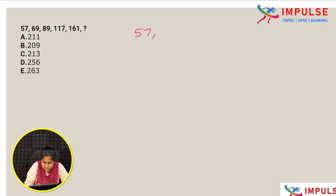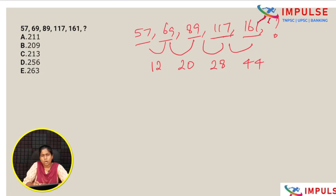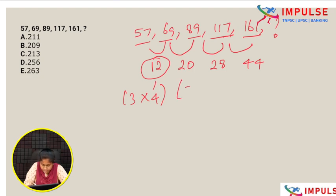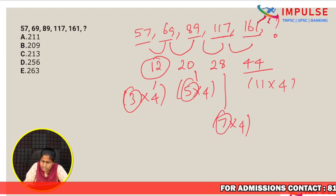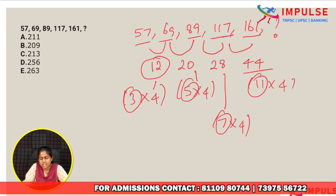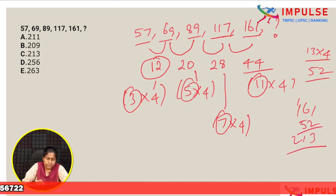Next question: 57, 69, 89, 117, 161, ?. The differences are: 12, 20, 28, 44. Now 12 is 3 × 4, 20 is 5 × 4, 28 is 7 × 4, 44 is 11 × 4. The multipliers 3, 5, 7, 11 are prime numbers. The next prime after 11 is 13, so 13 × 4 = 52. Therefore 161 plus 52 is 213. Option C.